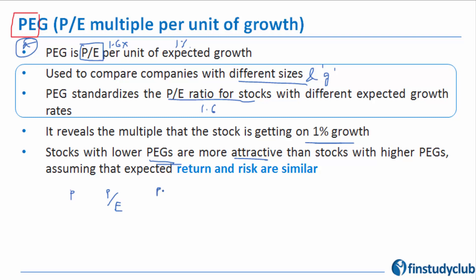The stocks with lower PEG are more attractive. Obviously, if the price is in the numerator—I'm writing all three fundamentals by which you made a selection—by price you selected A, by PE you selected B, and again by PEG you selected A.